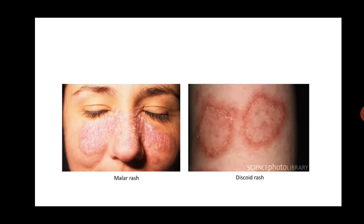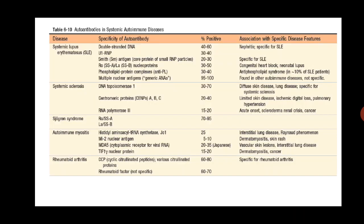The malar rash occurs in the malar region of the face in a butterfly shape. It is scaly with a silvery appearance, shows redness, and is photosensitive. A butterfly-shaped, photosensitive, scaly, red rash is usually diagnostic of SLE. A discoid rash is a similar rash occurring in other parts of the body with a disc shape, hence the name.